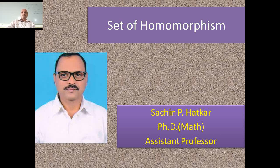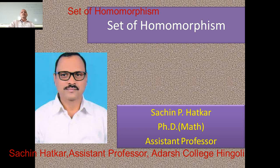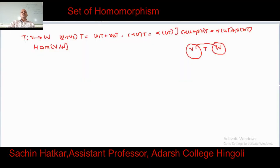Welcome friend. Today we will discuss the set of homomorphisms. You are all familiar with the definition of homomorphism. A homomorphism is a mapping T from vector space V into vector space W which satisfies the conditions: T(V₁ + V₂) = T(V₁) + T(V₂), and second condition, T(αV) = α·T(V), where alpha is a scalar and V is a vector.